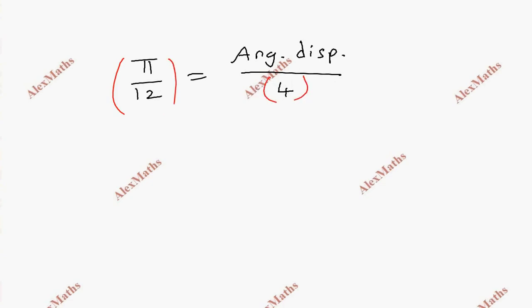Cancel. So angular displacement value equals π/12 into 4. Cancel to get π/3.